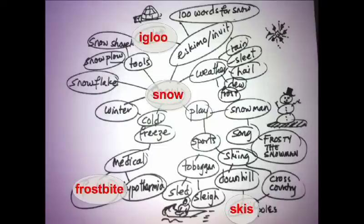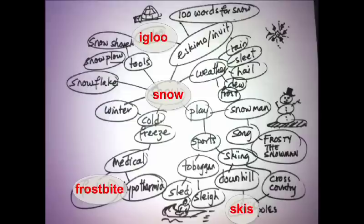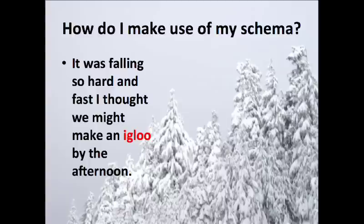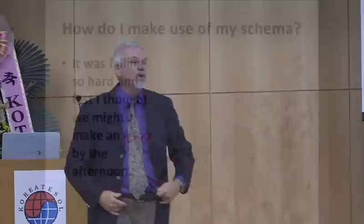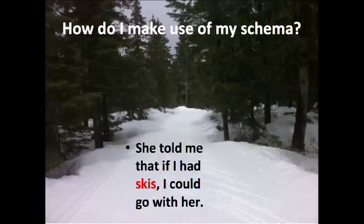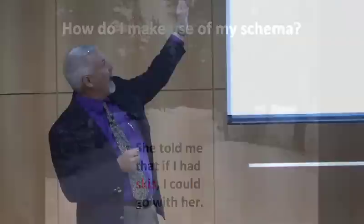I'd like to talk about three of these: an igloo, cross-country skiing, and schemas. Every time we have associations, we often have multiple associations, and we have to share these with kids. For example: 'He was falling so hard and fast' — you might think rain, a car over a cliff, or a piano falling. But then: 'I thought we might make an igloo by the afternoon' — the igloo tells us it's snow. Or: 'She told me that if I had skis, I could go with her.' In winter it means snow skis; in summer you might think water skis. So it's the context which changes the schema.